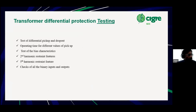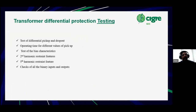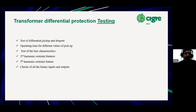There are some points on transformer differential testing. Normally, protection engineers test the differential pickup and dropout, then the operating times for different values of pickup, then they test the bias characteristics, and they test the second harmonic restraint features. The fifth harmonic restraint feature is basically related to the overflux condition, which is characterized by high fifth harmonic content. We don't want the differential relay to operate for it because there is separate overflux protection to cover overflux. The fifth harmonic restraint feature just ensures the fifth harmonic current doesn't cause the differential relay to operate.